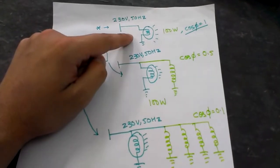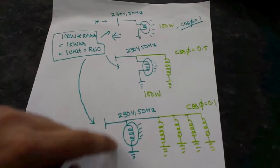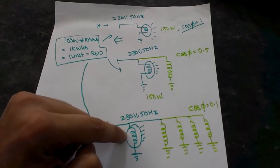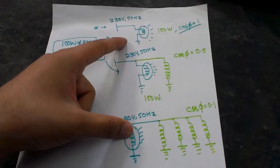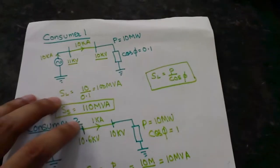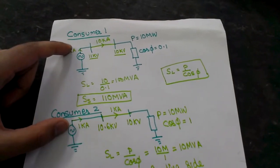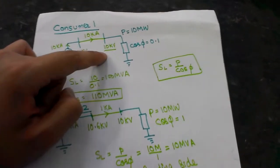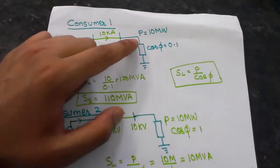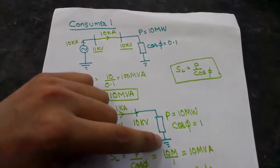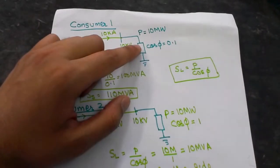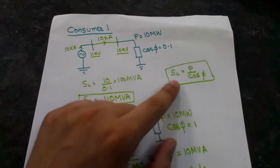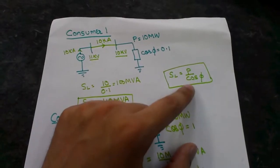No — we know that the two customers with poor power factor have to pay more compared to the first customer. Although they are consuming the same real power, what extra facility is being provided to these customers that causes them to be charged more? Now I'm considering two big consumers. The power utility is providing 10 kilovolts in both cases, and both are consuming 10 megawatts each. The power factor is 1 in one case and 0.1 in the other. The total apparent power S = P / cos φ = 100 MVA in the low power factor case.